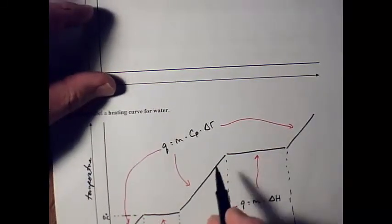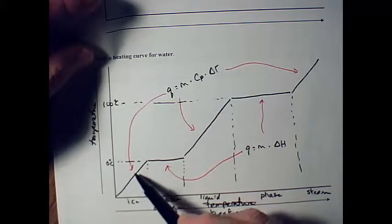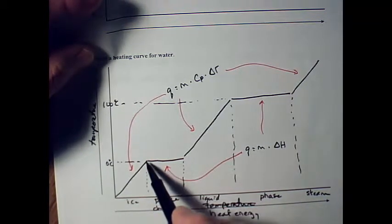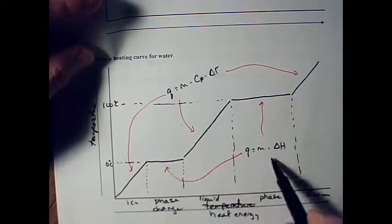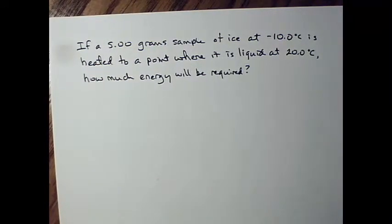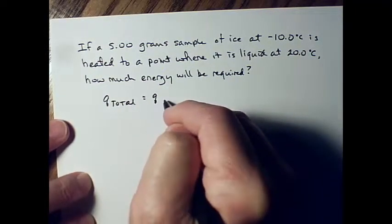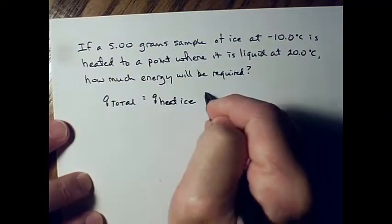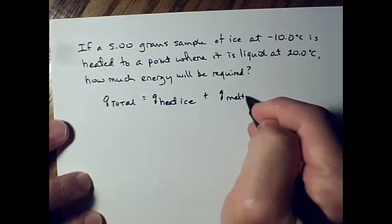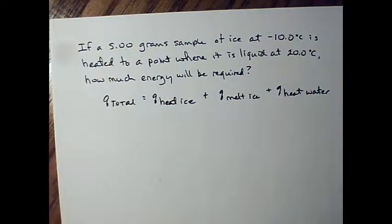Going back to our problem, we're starting out with ice at negative 10 degrees. We raise the temperature up to the point where it starts to melt at zero degrees C. Then the temperature doesn't change — we need the enthalpy equation for that range. Then we raise the liquid temperature up to 20 degrees. So Q total equals Q for heating the ice, plus Q for melting the ice, plus Q for heating the liquid water.